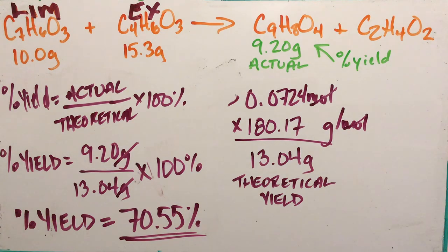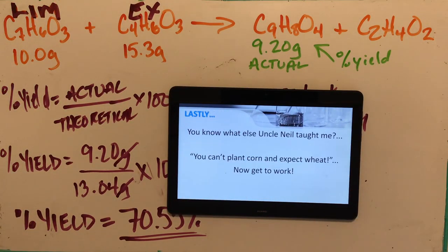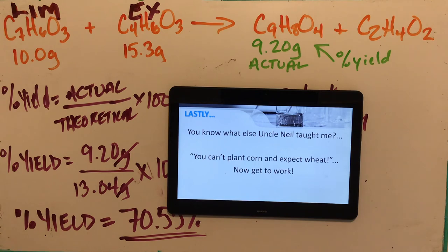That's our three examples done. As Uncle Neil taught me: you can't plant corn and expect wheat. Get to work! A worksheet will be posted on the D2L site. If you have any questions, reach out through the YouTube comment section or through Edsby if you're in my class. Talk to you soon - bye!